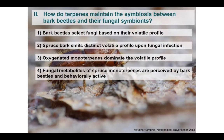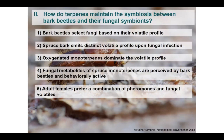From trap bioassays using aggregation pheromones and fungal volatiles, we found that adult females prefer a combination of pheromones together with fungal volatiles. In addition to male-produced aggregation pheromones, females can also use fungus-produced volatiles to locate a suitable breeding site — possibly to identify a beneficial symbiont or to locate trees whose host defenses have been overwhelmed.